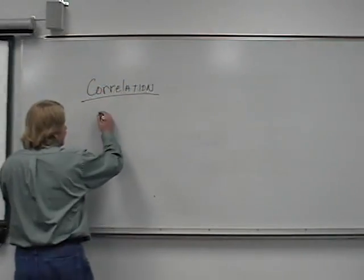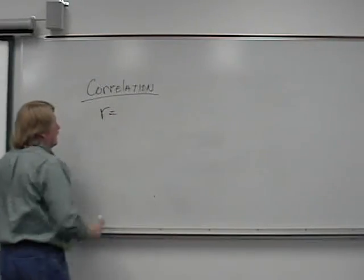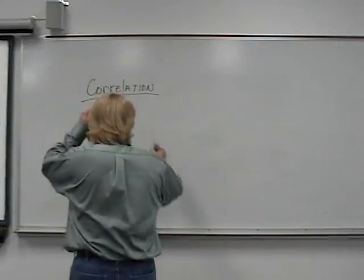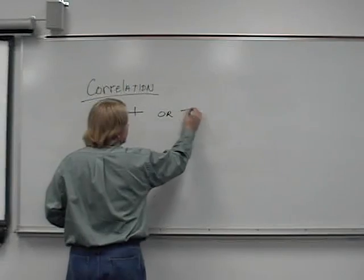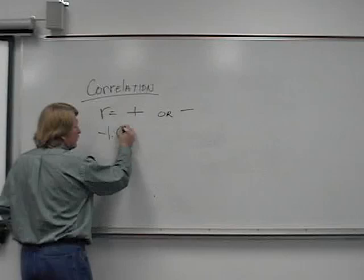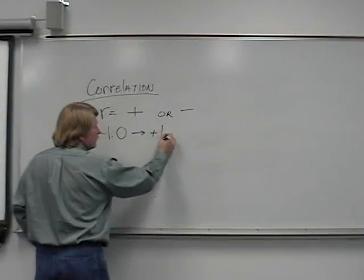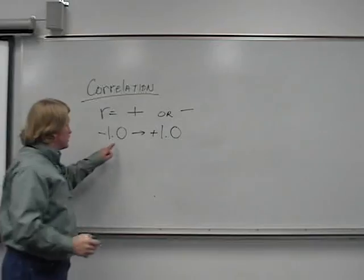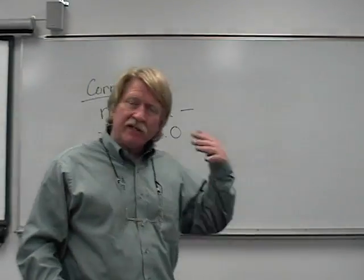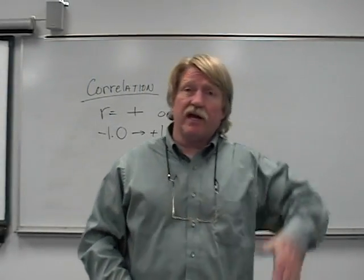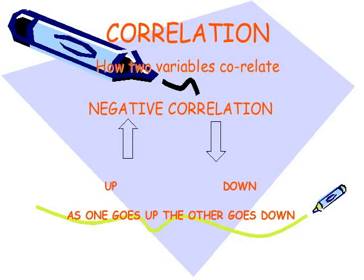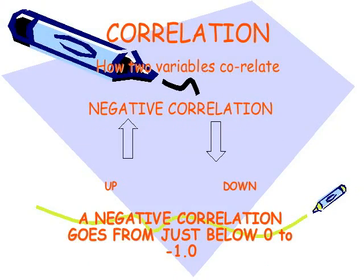Correlation is measured in a variety of ways but we're using something called Pearson's R, symbolized by a little R. That R can be a positive or a negative number. Its lowest measure can be minus 1.0 and it can run all the way up to a positive 1.0. Each of these is equally strong correlation. A correlation of minus 1.0 means as variable A goes up, variable B goes down perfectly — like a teeter totter. This would be a minus 1.0 negative correlation.